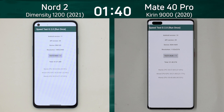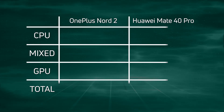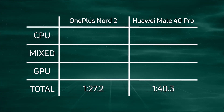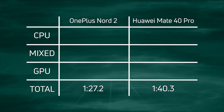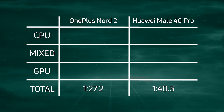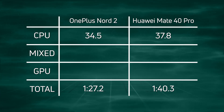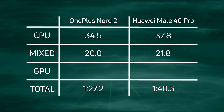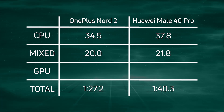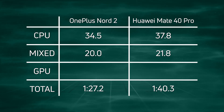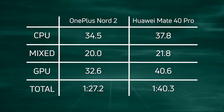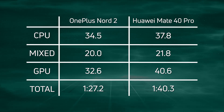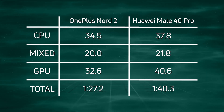Let's break down the scores. A convincing win for the OnePlus Nord 2 with the Dimensity 1200 at 1 minute 27.2, with the Huawei Mate 40 Pro coming in 13.1 seconds later at 1 minute 40.3. Looking at the CPU scores: 34.5 versus 37.8, as expected from the A78 cores in the Nord 2. In the Mixed CPU/GPU phase: 20 seconds versus 21.8 seconds — we knew it was going to be close. In the GPU phase: 32.6 versus 40.6, so the Mate 40 Pro was not able to do better there, even though it has, on paper, the latest generation GPU — it was still beaten by the OnePlus Nord 2.